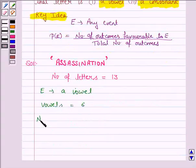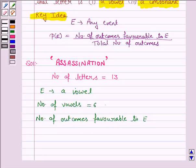So the number of outcomes favorable to E is equal to 6. Therefore, the probability of choosing a vowel is equal to 6 by 13. That is the number of outcomes favorable to E upon the total number of outcomes. Here, the total number of outcomes are 13 as the number of letters in this word is 13.